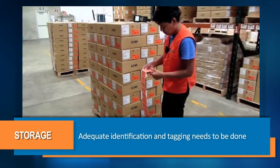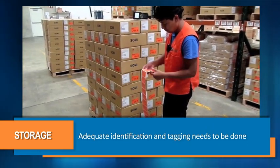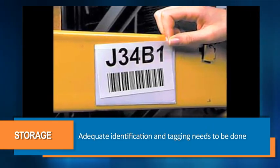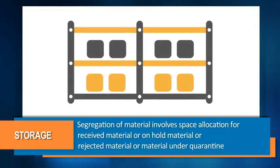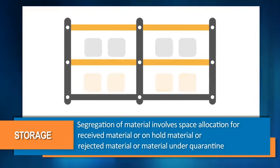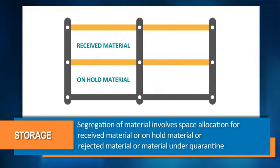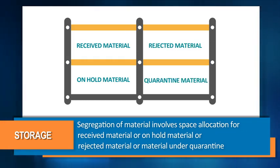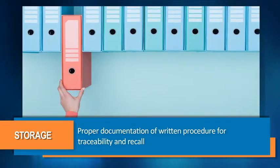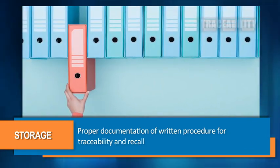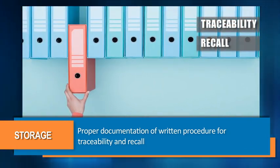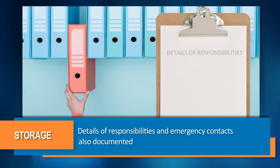Adequate identification and tagging needs to be done for each and every material that is stored. Segregation of material also involves space allocation for received material, on-hold material, rejected material, or material under quarantine.